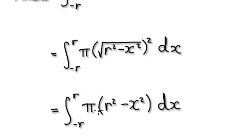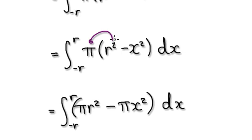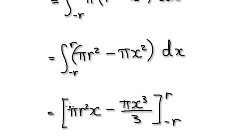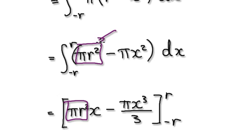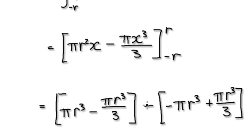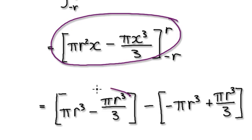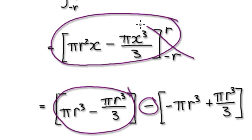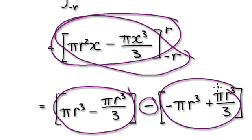Don't forget r is a constant in our scenario. So when you come to integrate, this whole term r squared is just a constant — integrating a constant gives you x times that constant. Then integrate the x squared term, which gives you x cubed over 3. Now it's a matter of evaluating at r and taking away the evaluation at negative r.